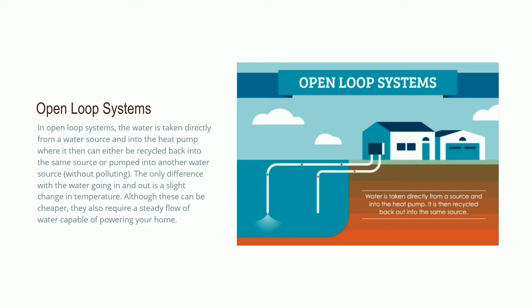In the open loop system, the working is similar to the closed loop system as explained before. The only difference is that water is drawn from one reservoir and rejected into another reservoir, or the same reservoir, for heating or cooling purposes.